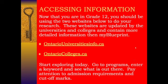Up until this point you've used MyBlueprint.ca for a lot of your research, and it's a great website. But now that you're in Grade 12, there are two websites we want you to start using. The first is OntarioUniversitiesInfo.ca and the second is OntarioColleges.ca. I'm going to show you very quickly how to use both to get started — you go to programs, enter a keyword, and see what's out there, including admission requirements and cutoff marks.